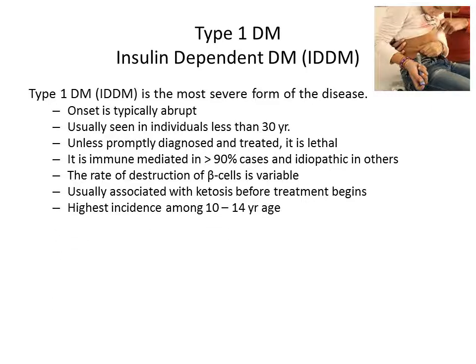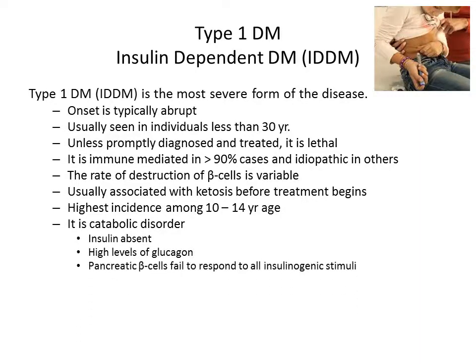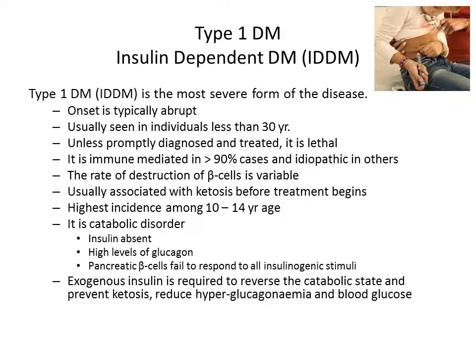Type 1 is usually associated with ketosis even before treatment begins, and treatment is required to control the ketosis. The highest incidence occurs among 10 to 14 years of age. It is a catabolic disorder because insulin is absent and high levels of glucagon are present. The pancreatic beta cells fail to respond to all insulinogenic stimuli. Exogenous insulin is required to reverse the catabolic state, prevent ketosis, and reduce glucagon levels and blood glucose.